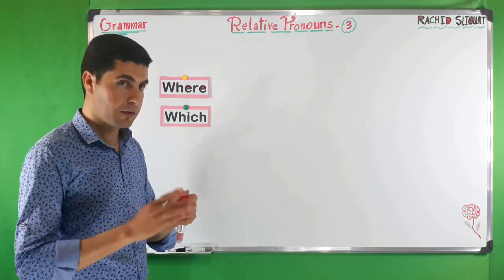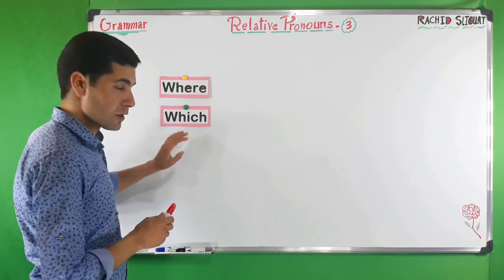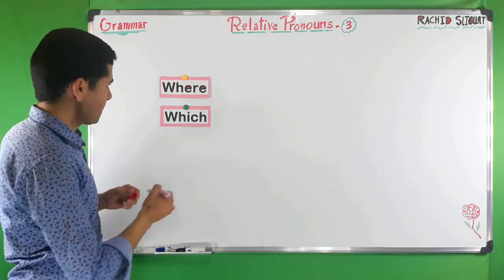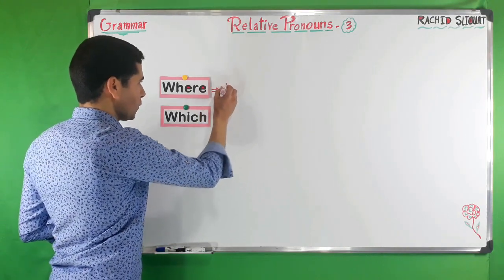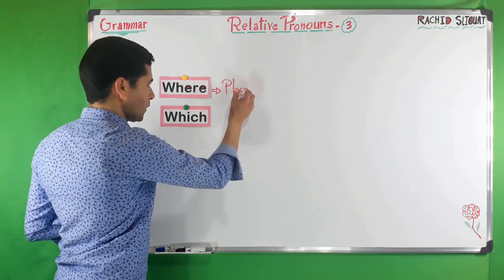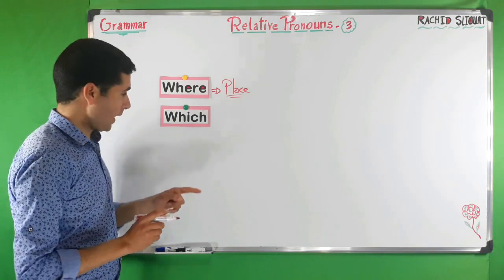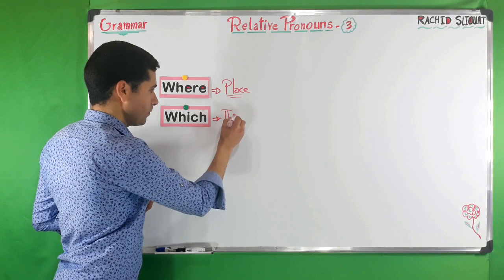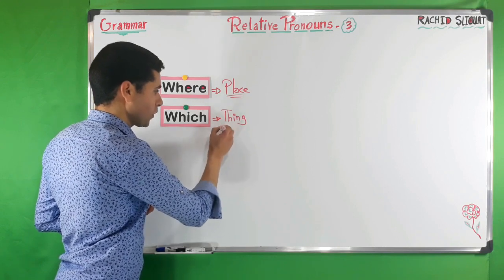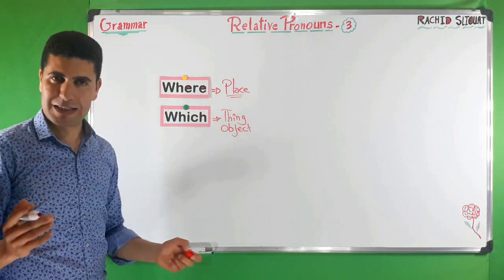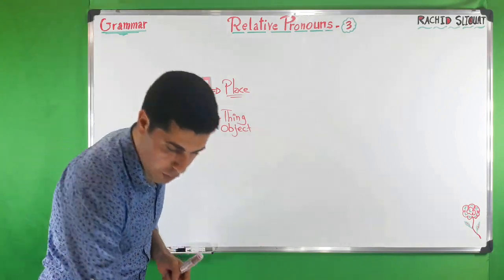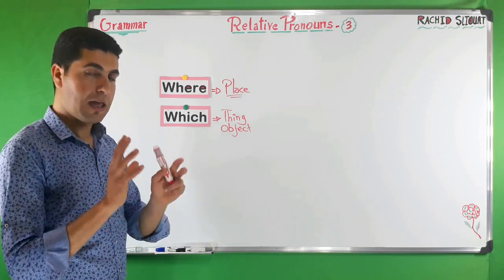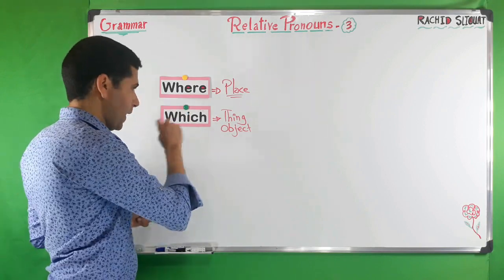In this episode we are going to see the difference between where and which. In the first episode we said that where is always for place, and which is for either things, objects, or animals. So we can say either which or that.